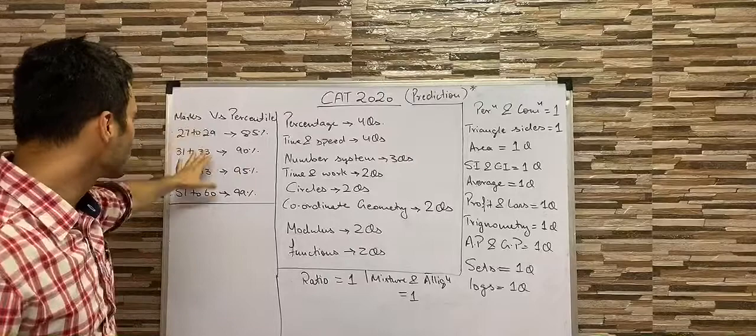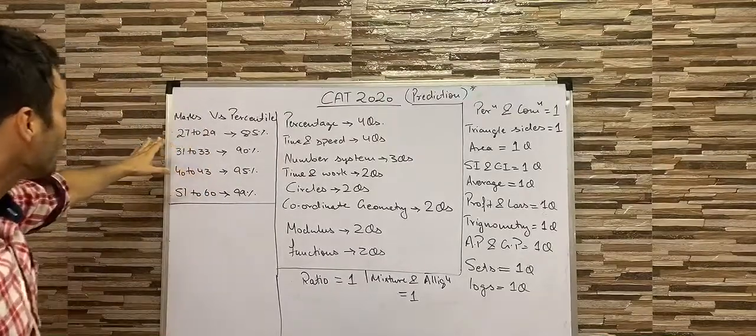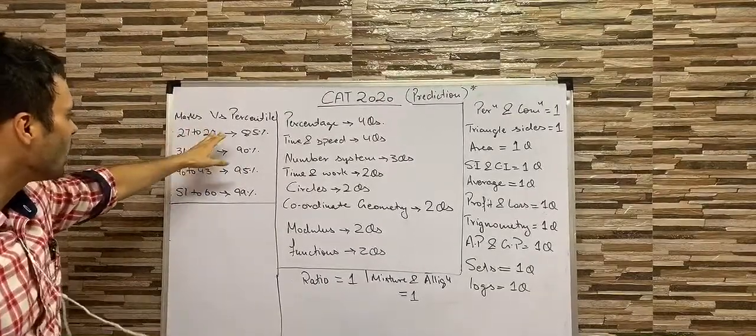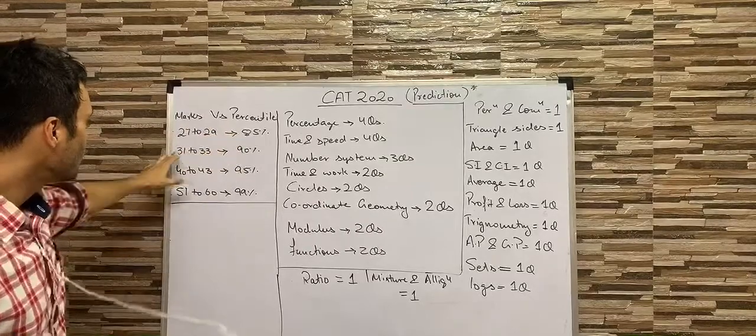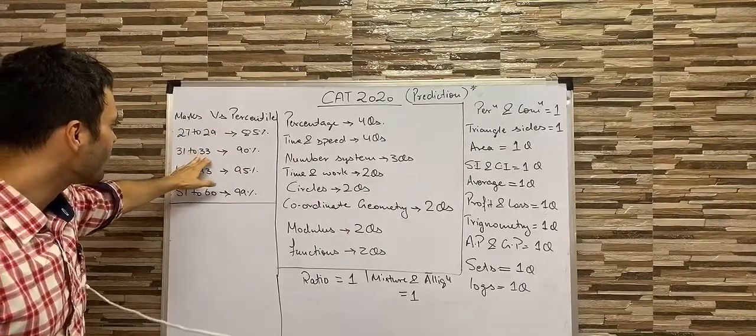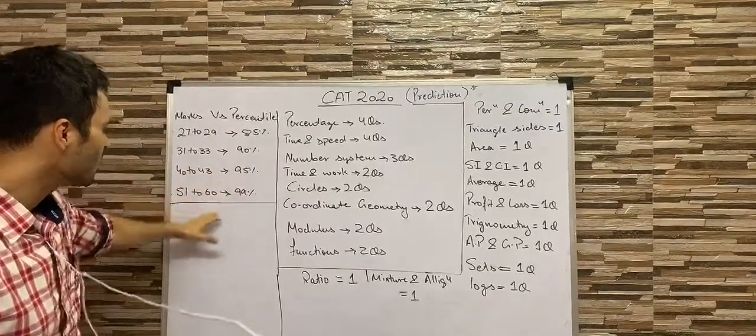First of all, guys, look at the marks versus percentile. If you get 27 to 29 marks, you are going to get 85 percentile. If you get 31 to 33 marks, you're going to get 90 percentile and so on and so forth.